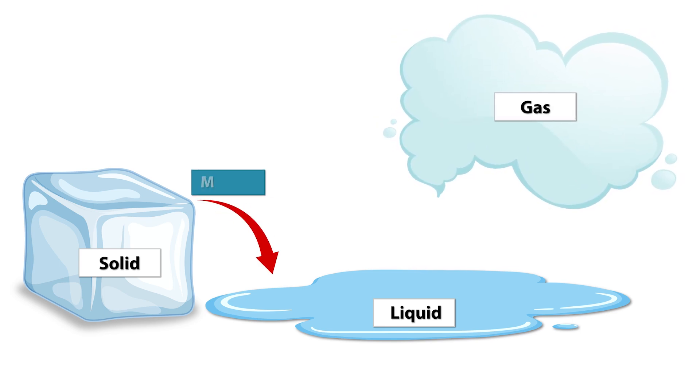When a solid is heated, it changes into a liquid. This process is called melting. When a liquid is heated, it changes into a gas. This process is called evaporation.